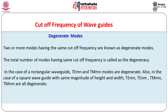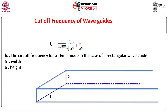The total number of modes having the same cutoff frequency is called the degeneracy. In the case of a rectangular waveguide, TE_MN and TM_MN modes are degenerate. For a square waveguide with equal height and width, TE_MN, TE_NM, TM_MN, and TM_NM modes are degenerate. The expressions for cutoff frequency corresponding to a particular mode can be derived mathematically. For example, the cutoff frequency of a TM_MN mode in a rectangular waveguide is given by an expression involving the geometrical parameters A and B representing the width and height.